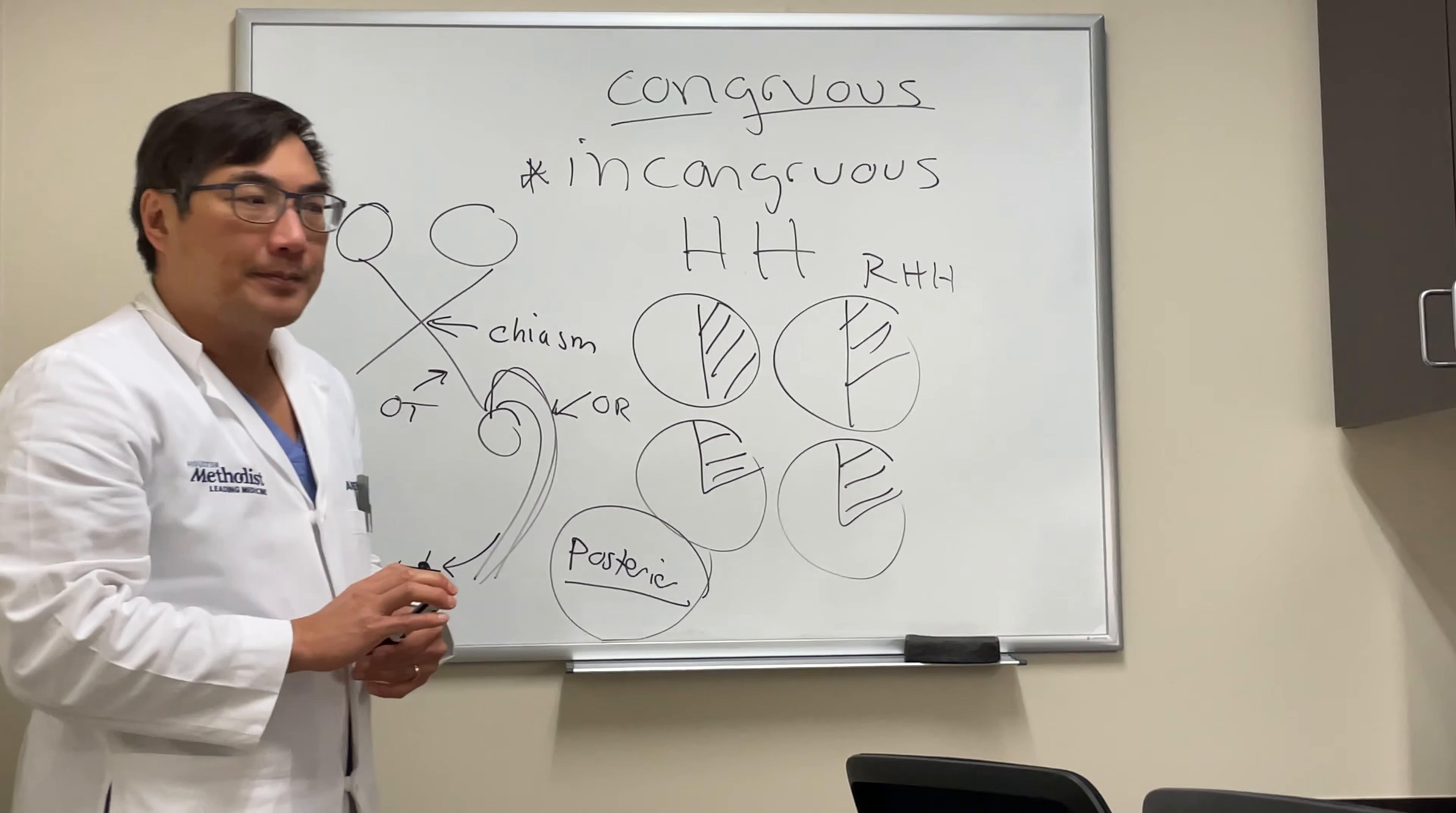However, as you're getting closer and closer to the occipital cortex, all of the fibers are converging on a single spot. When you have an occipital lobe lesion, it tends to produce field defects that are exactly the same in both eyes because exactly the same amount of fibers from each eye are converging on that piece of the occipital cortex.